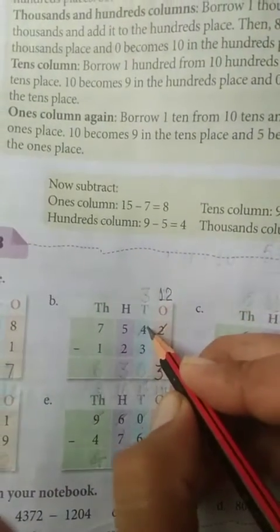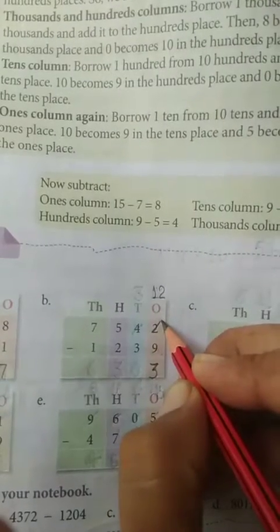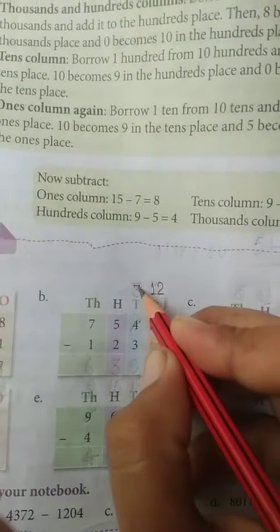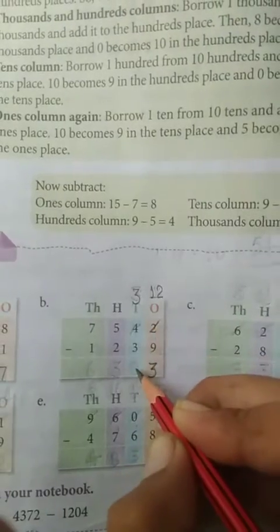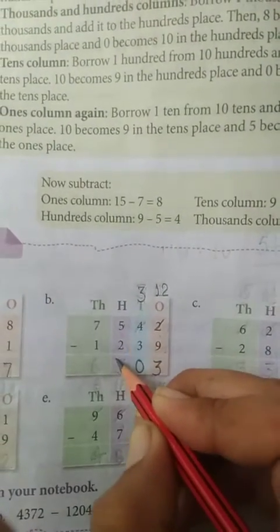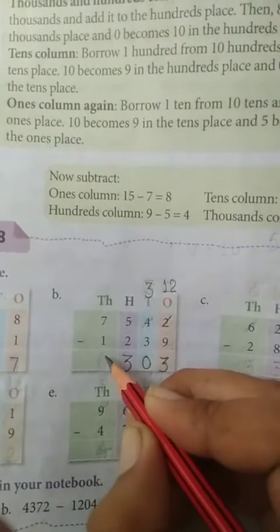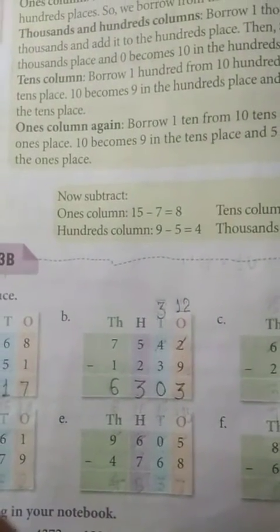अब यहाँ से आमने बोरो लिया था, 110. 4 10 में से 110 इदर कर दिया है, तो यहाँ पर कितना हो गया? 3. 3 minus 3, 0. Next, 100's place. 5 minus 2, 3. 7 minus 1 is equal to 6. So answer is 6303.